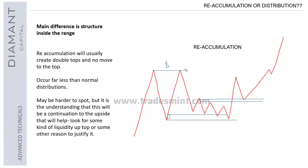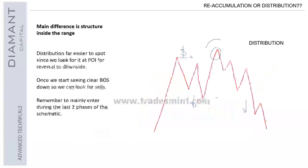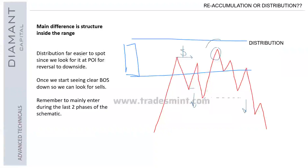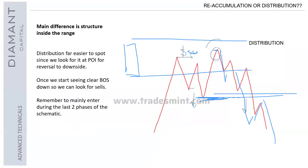I hope I made this a bit clearer between reaccumulation and distributions — obviously it's the same way around with the other schematics as well. On the distribution side, they're far easier to spot because you've got this point of interest, we start looking for movement there, we get that run on liquidity taking stop losses and moving down. Then when you've got that official move down below everything, that's when you know you're in the last phase and that's where you've got to try to enter.